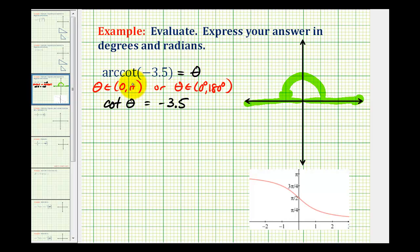But we also know that the cotangent function value is negative, so that means our angle must terminate in the second quadrant. Since this trig function value is not going to give us one of the common reference angles, we will have to use the calculator, but there's not an arc cotangent button on the calculator.